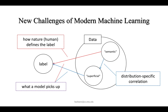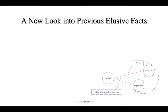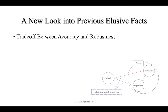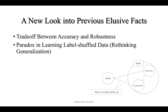Driven by this new understanding of the behavior, we can have a new look at many previous claims. In this paper, we easily prove the trade-off between accuracy and robustness, offer an explanation to the paradox in learning label-shuffled data — also known as the rethinking generalization problem — and give a re-examination of many popular heuristics, such as mix-up and batch norm.